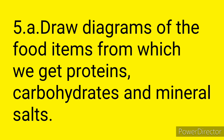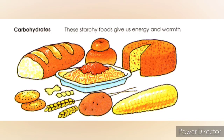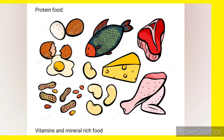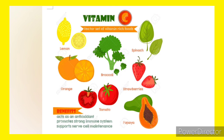Communication through mapping skills, drawing pictures and making models. A: Draw the diagrams of the food items from which we get proteins, carbohydrates and mineral salts. I am giving the pictures; you try to draw them yourself. First I have given carbohydrates — these starchy foods give us energy and warmth. Next, protein foods. Vitamins and mineral rich food. I have given the figures, you try to draw on your own and remember them.